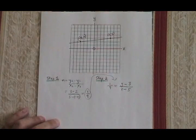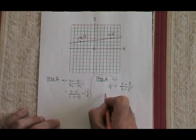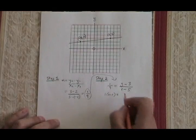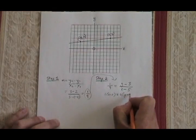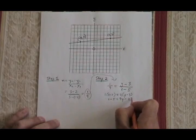I have now set up a cross multiplication situation. Top times bottom gives me 1 times x minus 5 equals. Bottom times top gives me 9 times y minus 3. This becomes x minus 5 equals 9y minus 27.